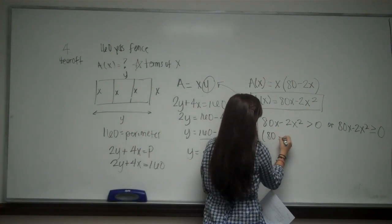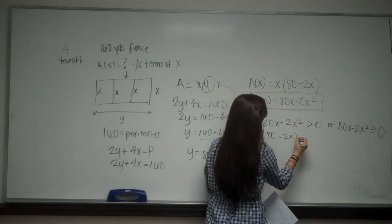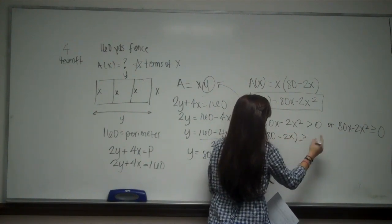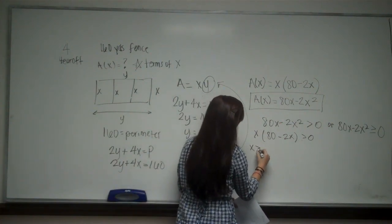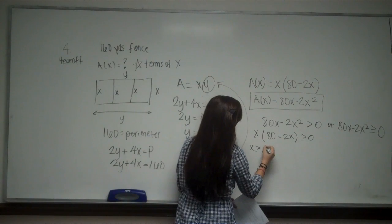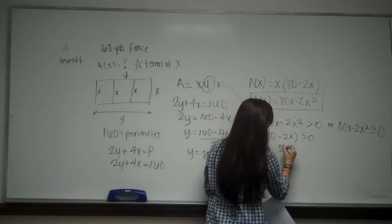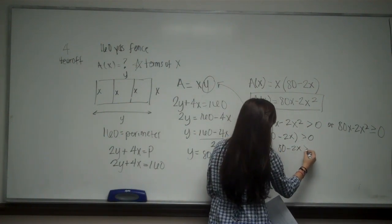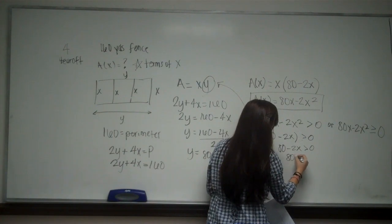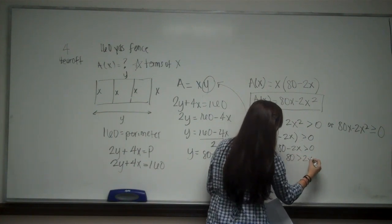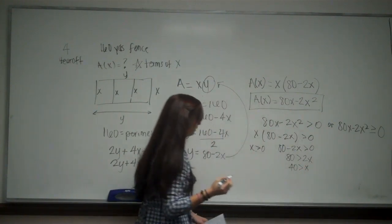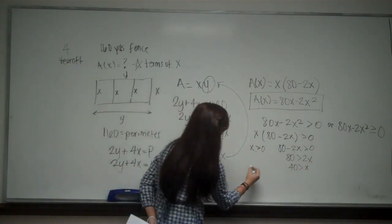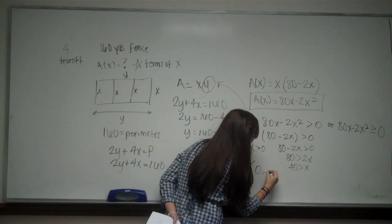So here I solve for x. I have to factor my x back out. And now I solve, I set each part greater than zero. So x has to be greater than zero. Or 80 - 2x has to be greater than zero. So 80 has to be greater than 2x, and 40 has to be greater than x.